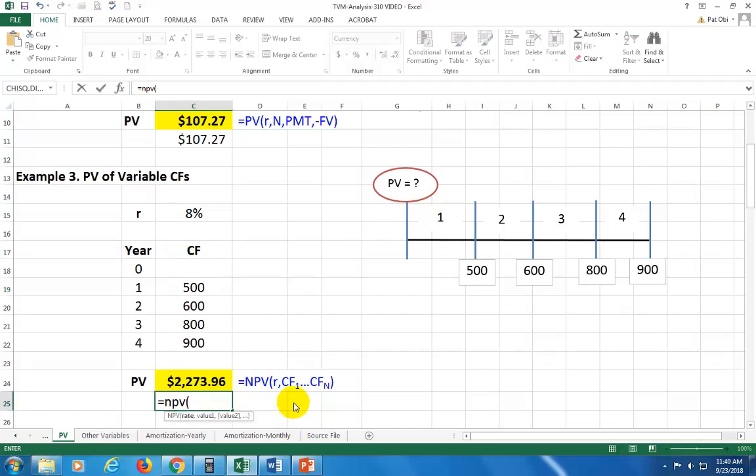So equal NPV, open parenthesis. It asks you for the rate. Click on this. Comma. And asks you for the cash flows, which are values. But notice it says values from time period one to the last. From time period one to the last. So if you had anything at time zero, you would have ignored it. So start from here and work your way down. And that's it. And you hit enter. And that's your result.